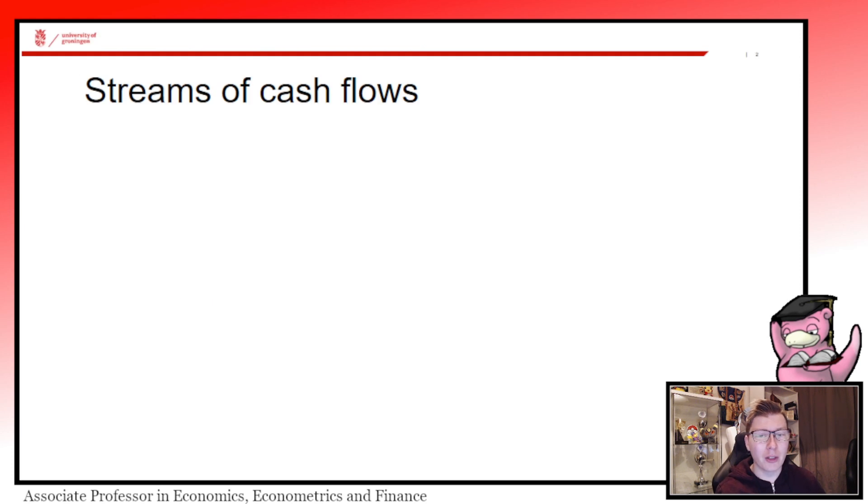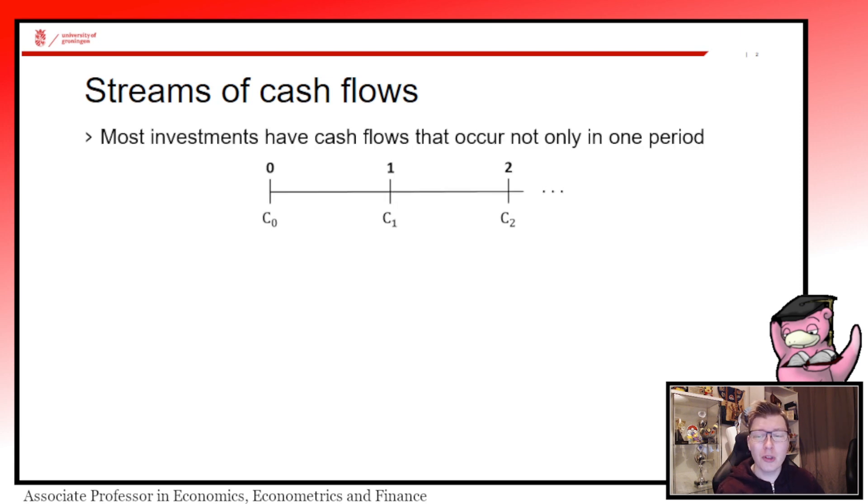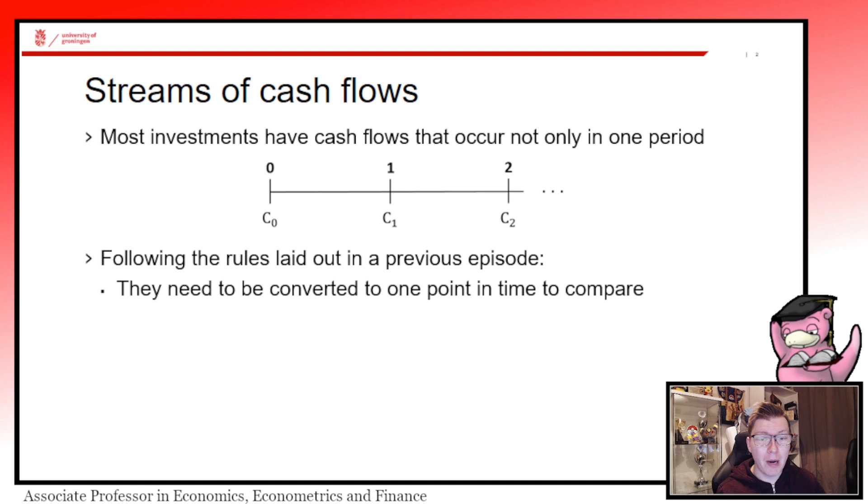Before we get there we have to briefly go over what are streams of cash flows, just like we did in the previous episode. Most investments have a cash flow that takes place in more than one period of time. We have a timeline which depicts cash flow c0 at time zero, cash flow c1 at time one, cash flow c2 at time two, and so forth as long as the investment takes place.